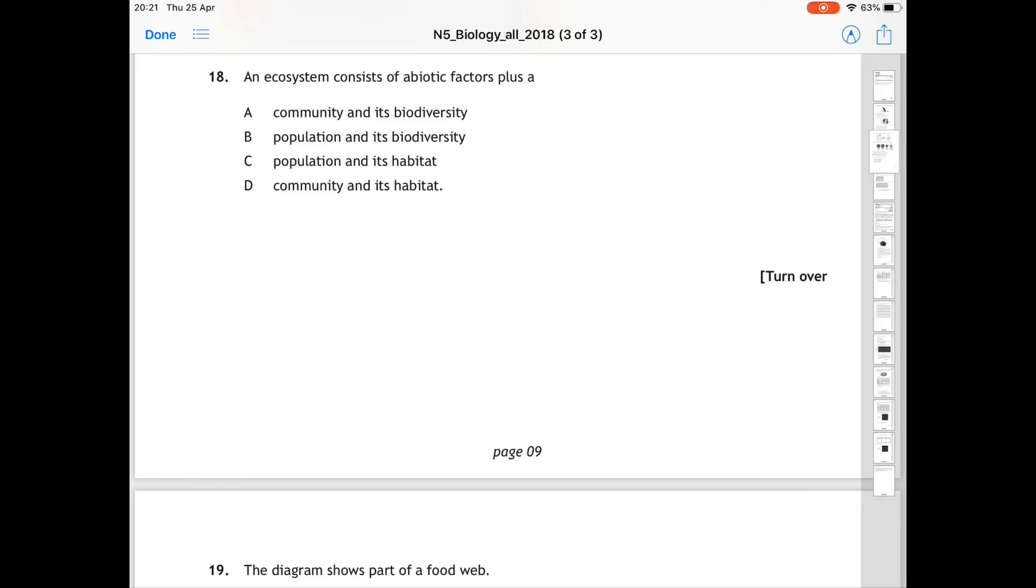For question 18, an ecosystem consists of abiotic factors plus a what? And it gives you examples of community, biodiversity, population and habitat. Hopefully you can go back to unit 3 and remember that community and its habitat plus abiotic factors is an ecosystem. So 18 is D.